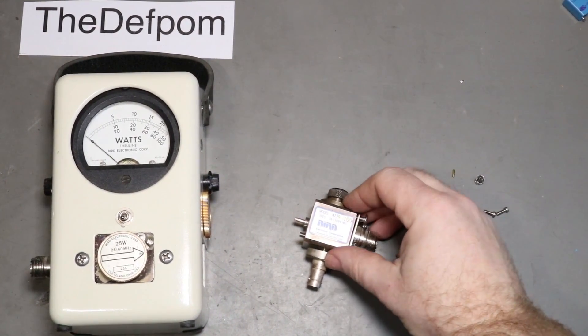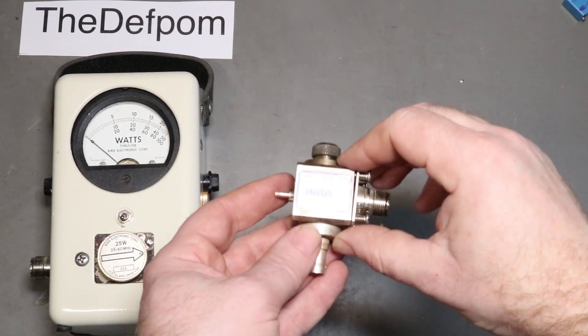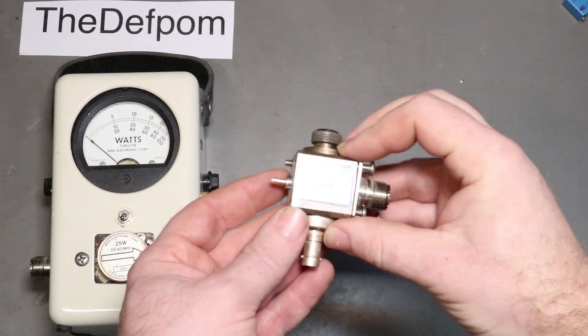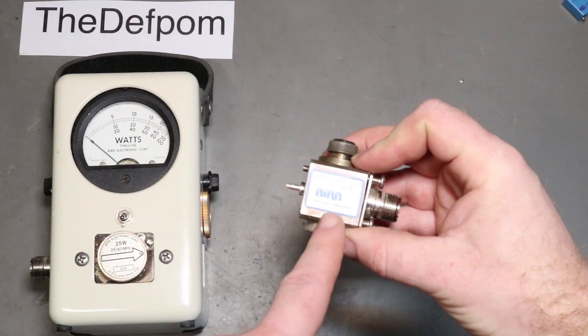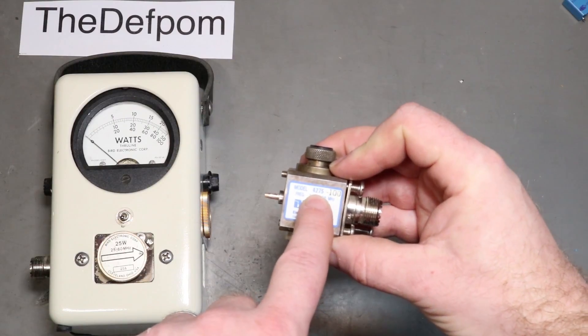I want to use this and realized I've got to look at this tap-off module here for my Bird RF meter. This is a 4275-100.